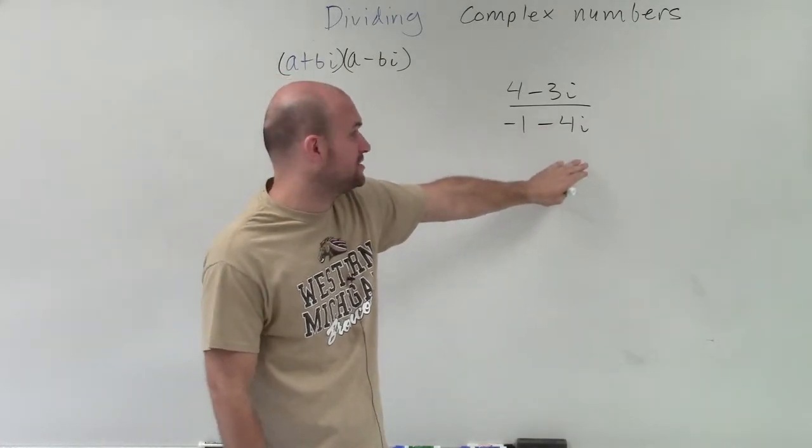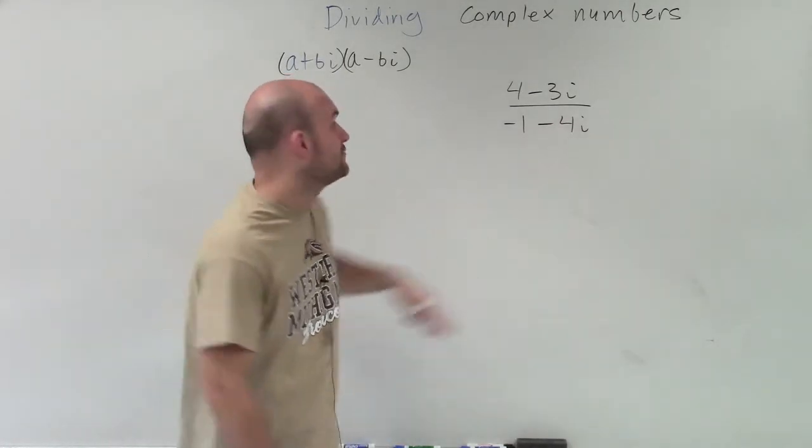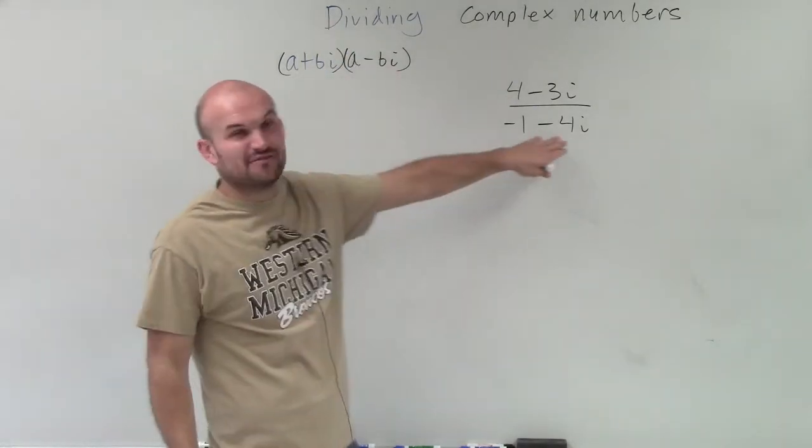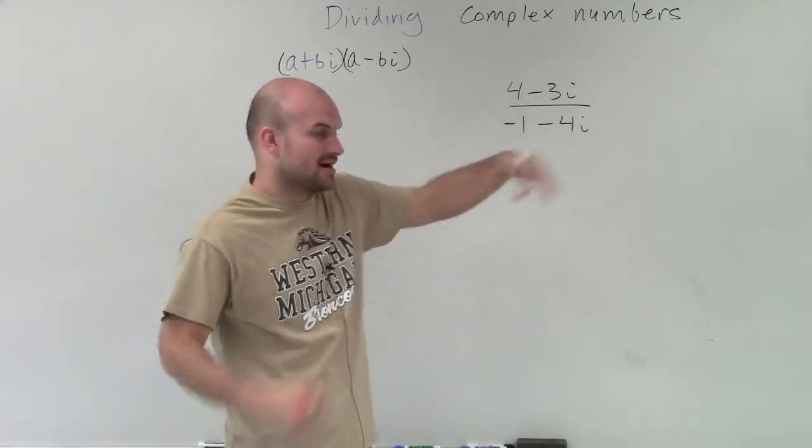But again, make sure that we have a binomial in our denominator that contains i. So therefore, we need to multiply by our conjugate. Now, I know this doesn't look like a plus bi because we have a couple negatives. It's negative 1 minus 4i. However,